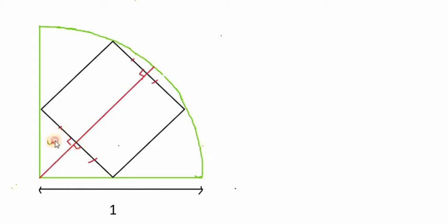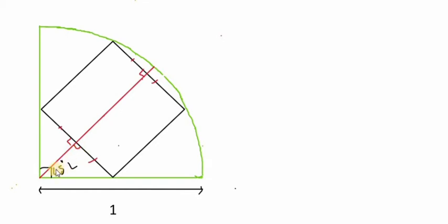Now since these two triangles are congruent to each other and they are right-angle triangles made at the center of the circle, this center angle is 90 degrees, so we can conclude that this angle is 45 degrees and this one is also 45 degrees. Since this is a 90-degree angle and this is 45, then similarly we can conclude that this one is also 45 degrees.